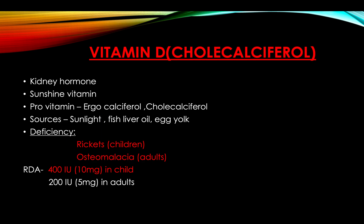Vitamin D, or cholecalciferol, is also known as the sunshine vitamin and kidney hormone. Its provitamins are ergocalciferol and cholecalciferol. Sources include sunlight, fish liver oil, and egg yolk. Deficiency produces rickets in children and osteomalacia in adults. RDA is 400 IU (10 mcg) in children and 200 IU (5 mcg) in adults.